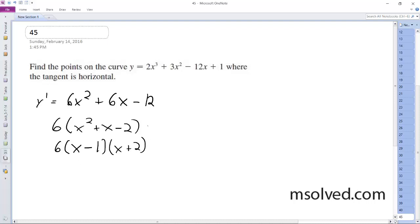And then it was equal to 0, so we can get rid of this. So then our 0 points are going to be x is equal to negative 2 and 1.